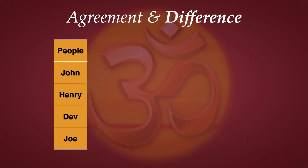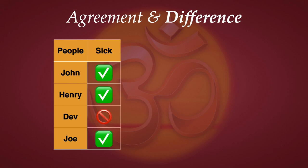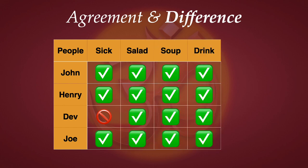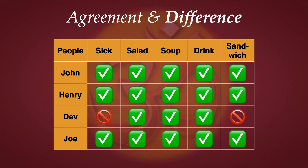Now let's look at difference. The same people go out to eat and only three of them get sick — Dave doesn't get sick. We find that only Dave did not take the sandwich, and he's the only one who did not get sick. That's difference. The proof of difference means the absence of a factor determines the causality. The method of agreement means the concurrence of several factors determines the causality. So the first three chapters of the Mandukya Upanishad use the method of agreement: by scripture, by logic, and by practice one can realize Brahman — the result is the same in all three cases, meaning Brahman is true.